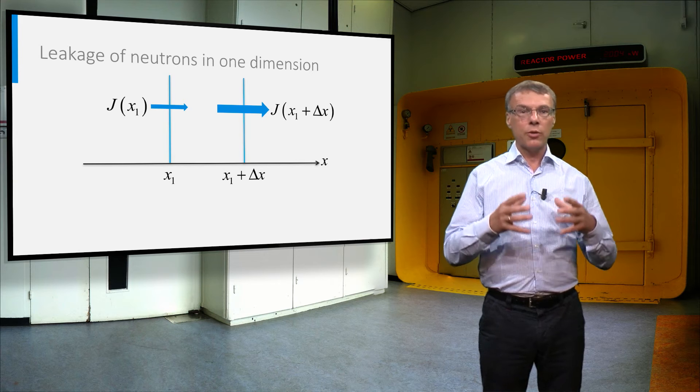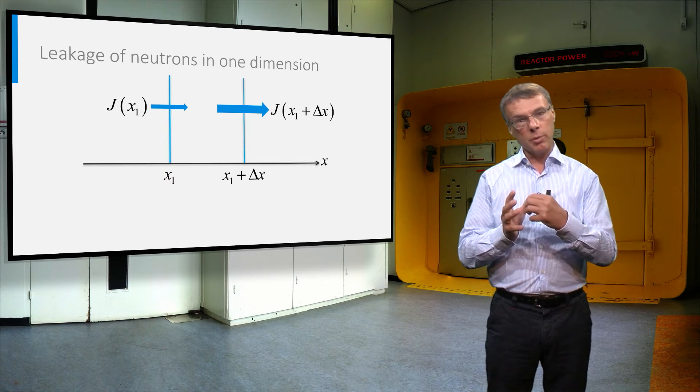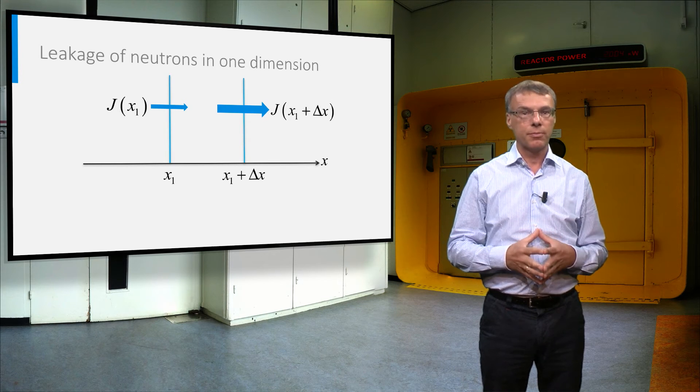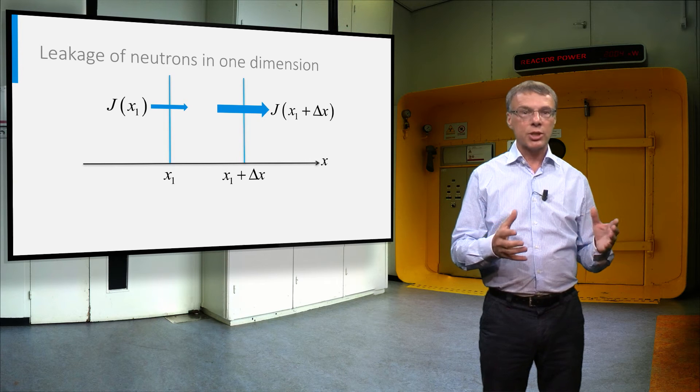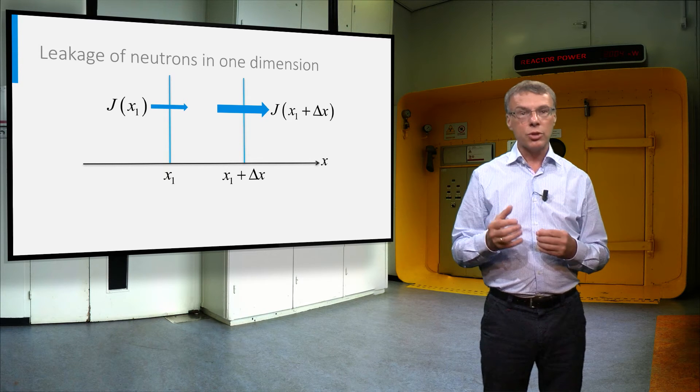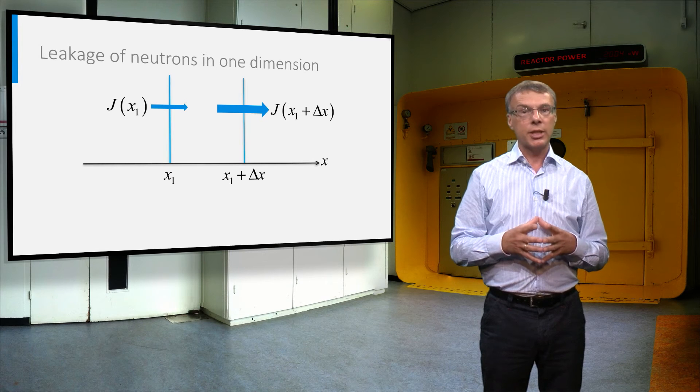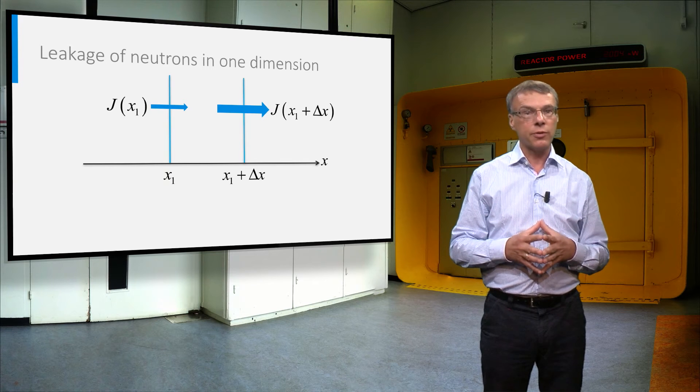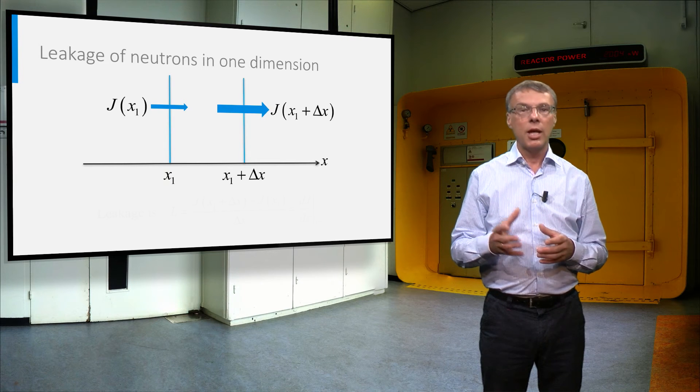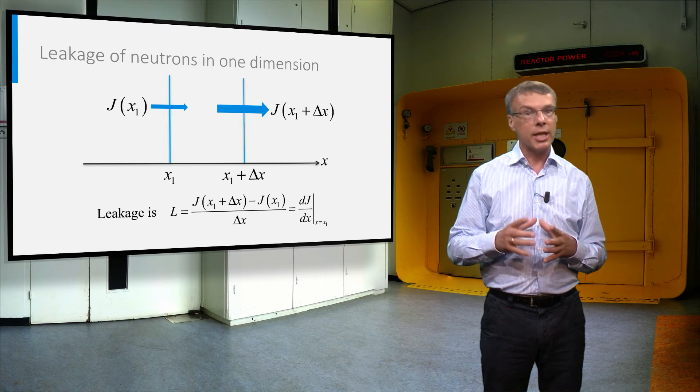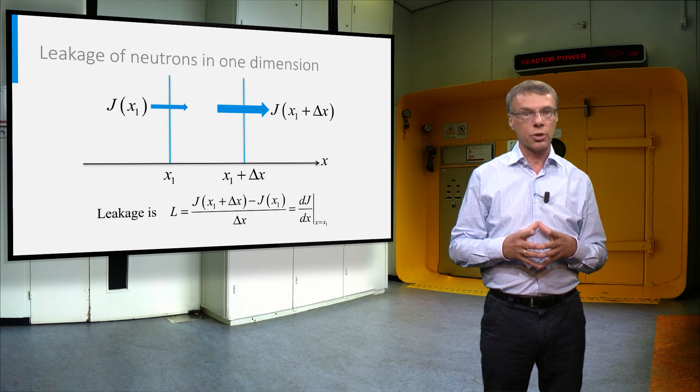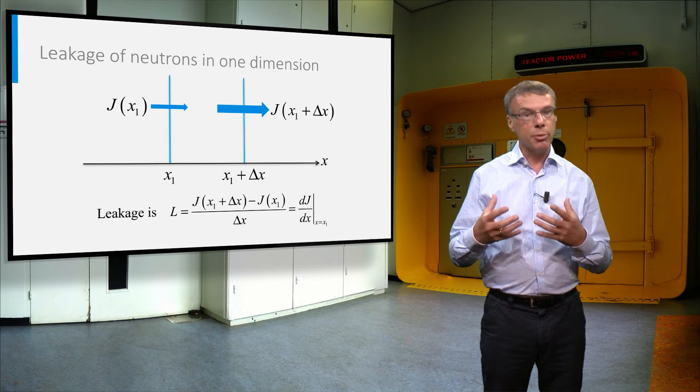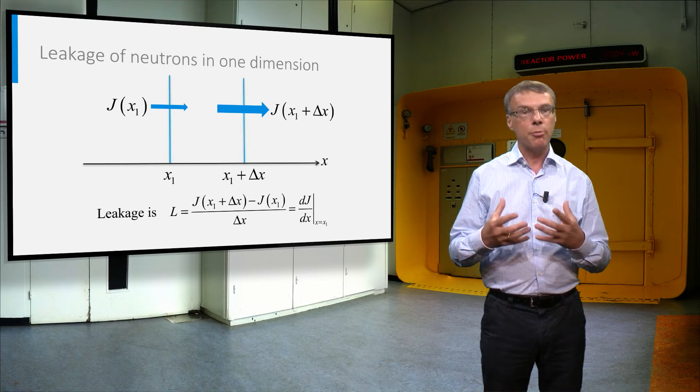Now we will derive an expression for the leakage of neutrons from a volume element. For simplicity we will derive this expression in one dimension first. Imagine neutrons streaming from left to right. If the neutrons streaming out of an element delta x is larger at the right boundary than it is at the left boundary, there is a net positive outflow of neutrons. The leakage per unit size of the element delta x is equal to the derivative of the neutron current, called j. On the next slide we will derive a simple expression for the neutron current based on Fick's law.